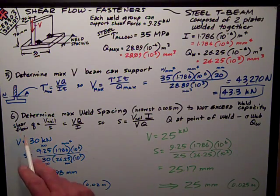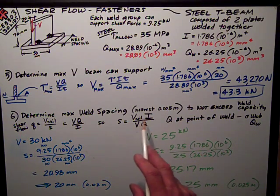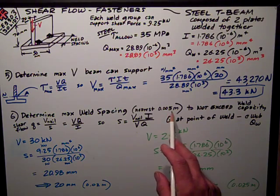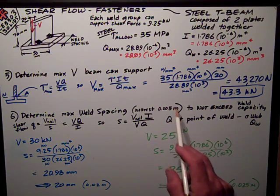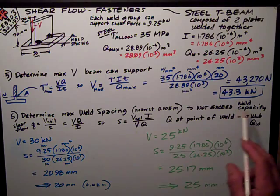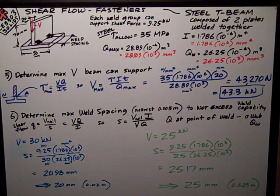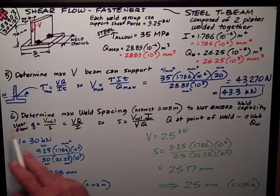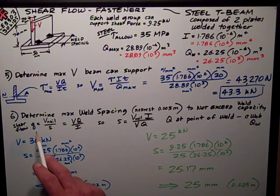The second question on that page was determine the maximum weld spacing to the nearest 0.005 meters, or really 5 millimeters, to not exceed the weld capacity. Okay, from my equation sheet, I was given these two equations for shear flow, little q.